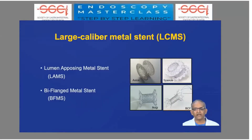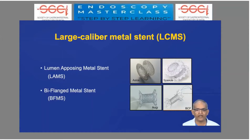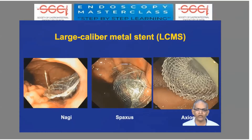Metal stents are currently our preferred stents and there are several types. In the broad family of large caliber metal stents (LC-MS), we have LAMS — lumen opposing metal stents — which includes Axios and Spaxus, and biflanged metal stents which include Nagi and similar stents. In the endoscopy view, those in the center and right are the LAMS (Spaxus and Axios), while on the left is a biflanged stent. The adherence of biflanged stents is much less, which is why migration risk occurs.